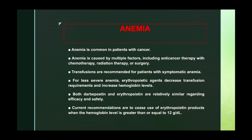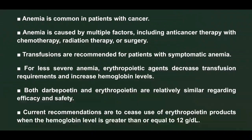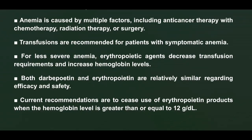Hematological complications with chemotherapy: anemia is common in cancer patients and is caused by multiple factors including anticancer therapy, radiation, or surgery. Blood transfusions are recommended for symptomatic anemia. For less severe anemia, erythropoietic agents like darbepoetin and erythropoietin decrease transfusion requirements and increase hemoglobin levels. Use of these agents must be cautious due to potential severe side effects like stroke. Current recommendations are to cease erythropoietin products when hemoglobin reaches ≥12 g/dL.